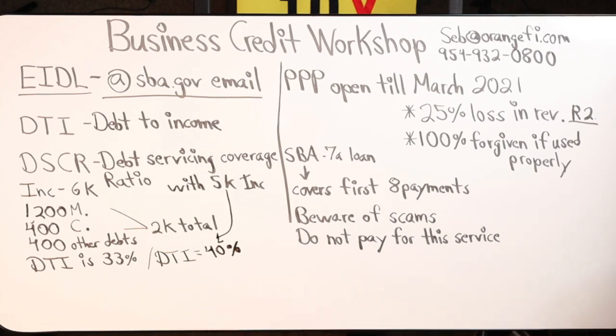It depends on the loan type — on a mortgage, sometimes they'll go up to 40 or 43%, but yes, you're pushing it. So that's debt to income. There are two ways to reduce it: increase your income, reduce your debt, or both at the same time. We can implement velocity banking or debt snowball to get things going.